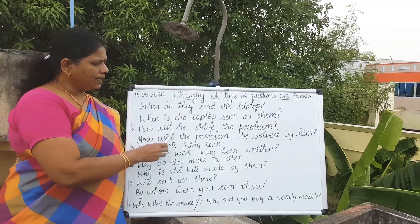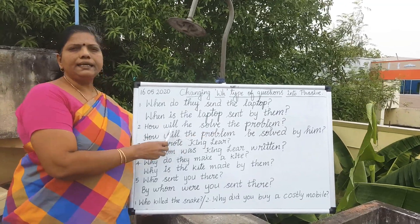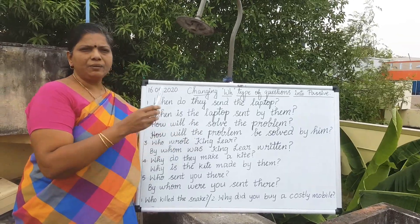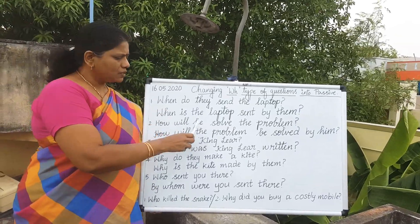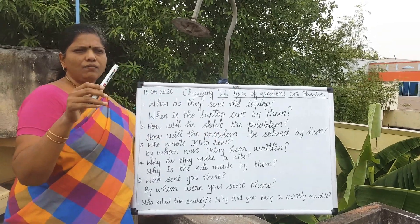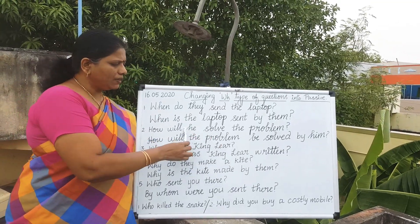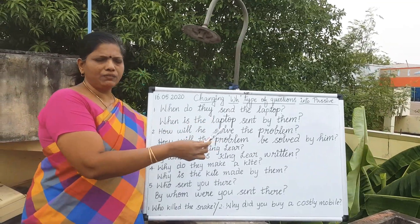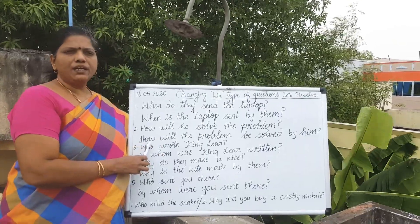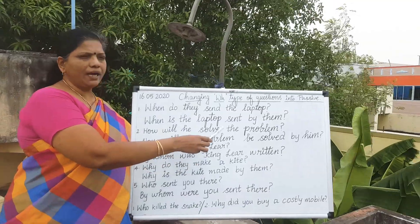Second one: How will he solve the problem? The active statement is: He will solve the problem. Subject, verb, object. The problem will be solved by him. So, how will the problem be solved by him?